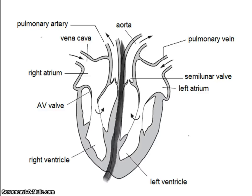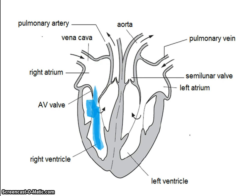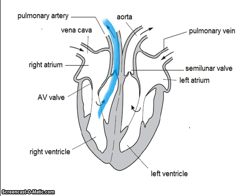Let's take a look at the direction of blood flow. Blood comes in from the body cells through the vena cava, filling up the right atrium with deoxygenated blood. The AV valve, or the tricuspid valve, opens and blood flows into the much larger ventricle. The AV valve shuts and the heart contracts, pushing the blood under high pressure through to the lungs by the pulmonary artery, and the semilunar valve opens.